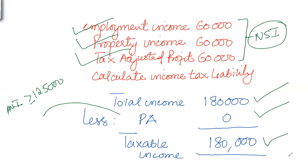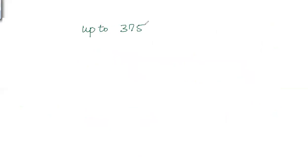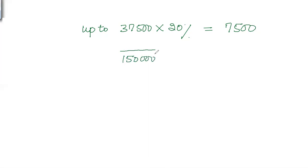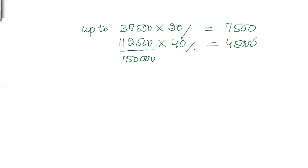So the taxable income is the same as total income. Applying rates on £180,000 non-saving income: up to the basic rate band of £37,500, the rate is 20%, giving £7,500. The second band ends at £150,000, so the income falling in the second band is £150,000 minus £37,500, and the rate is 40%, giving £45,000 tax on this.